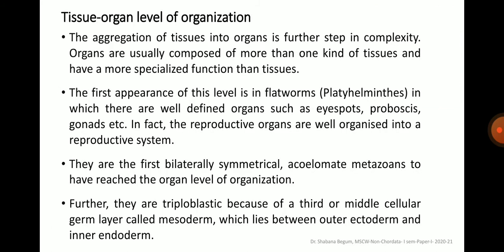The next type of body organization is the tissue-organ level of organization. Here, the aggregation of tissues into organs is a further step in complexity. Organs are usually composed of more than one kind of tissue and have a more specialized function than tissues. The first appearance of this level is in flatworms, that is the Platyhelminthes forms, which have well-defined organs such as eye spots, proboscis, gonads, etc. The reproductive organs are well organized into a reproductive system. Platyhelminthes are the first bilaterally symmetrical acoelomate metazoans to have reached the organ level of organization. Further, they are triploblastic because of a third or middle cellular germ layer called mesoderm, which lies between the outer ectoderm and inner endoderm.